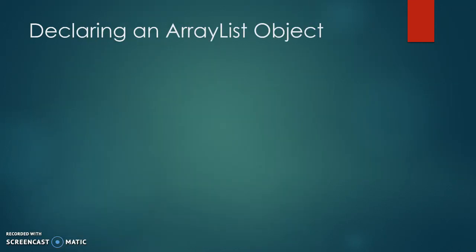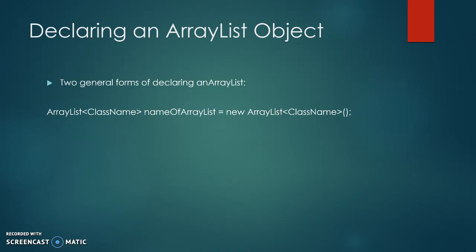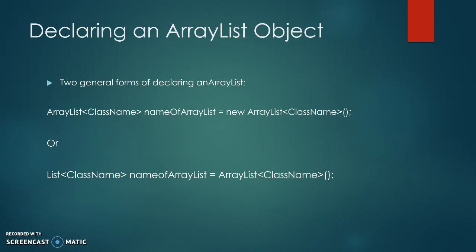Declaring an ArrayList object. Two general forms of declaring an ArrayList are shown. The ArrayList uses a pair of angle brackets to enclose the class name of the object it will store. An ArrayList always starts out empty. When you create an ArrayList object, it is empty, meaning that there is no item in the list. It's like when your mom starts to make a to-do list and she writes the words to-do on the top of a piece of paper — the list is created, but there's nothing in the list.